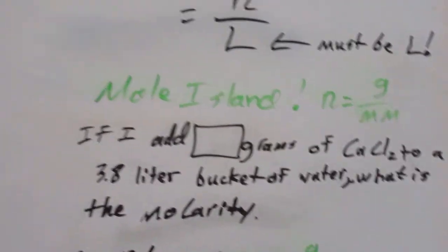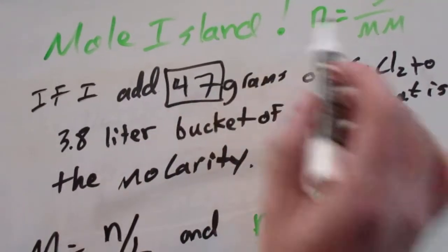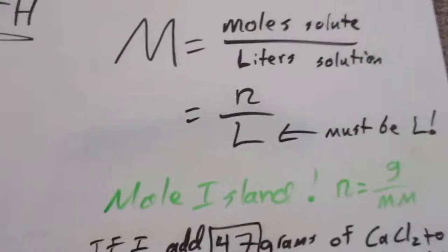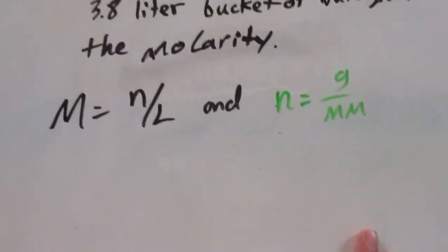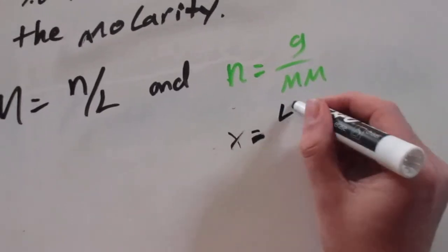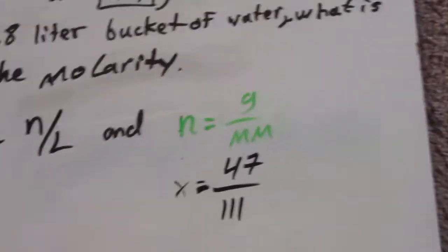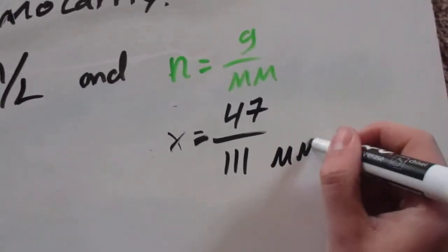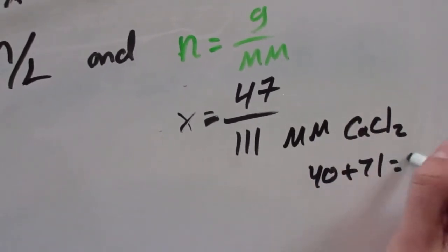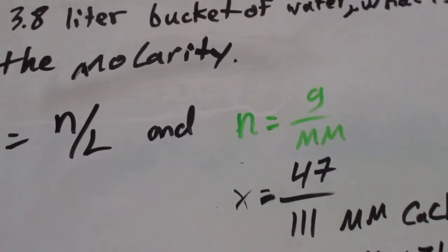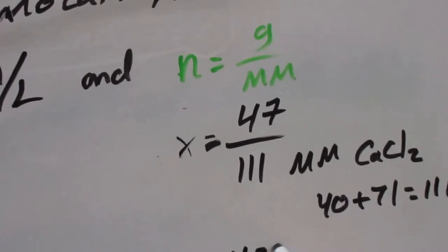The problem: If I add 47 grams of calcium chloride to a 3.8 liter bucket of water, what is the molarity? Well, I have my equations. So first thing I need to do is, I notice that this says grams, it doesn't say moles. So the first thing I need to do is I need to be over here. Now, I know I have 47 grams, and the molar mass for calcium chloride, CaCl2, that's going to be 111 grams. The way I got this is it's the molar mass, CaCl2, and that's going to be 40 plus 71.